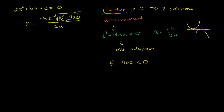If we're dealing with real numbers, we can't take the square root of a negative number, so this means we have no real solutions. In the future you'll see we will have complex solutions, but if we're dealing with real numbers, we have no real solution — because the square root of a negative number makes no sense in the real numbers.